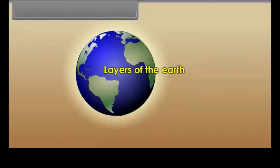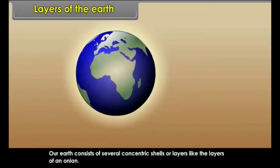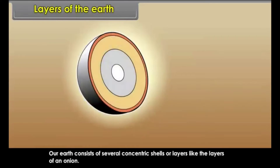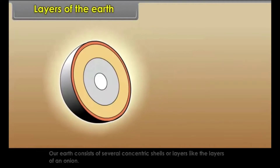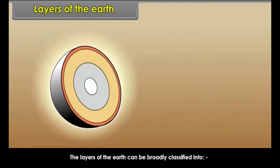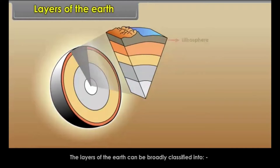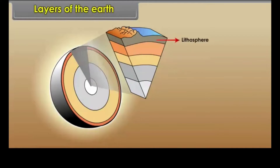Layers of the Earth. Our Earth consists of several concentric shells or layers, like the layers of an onion. The layers of the Earth can be broadly classified into Lithosphere, Mantle, and Core.